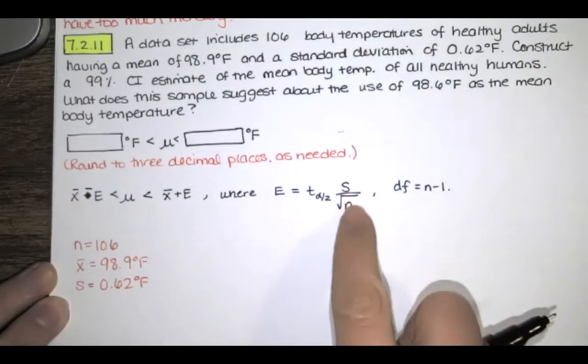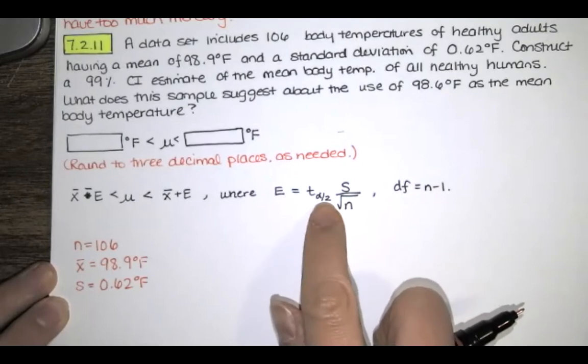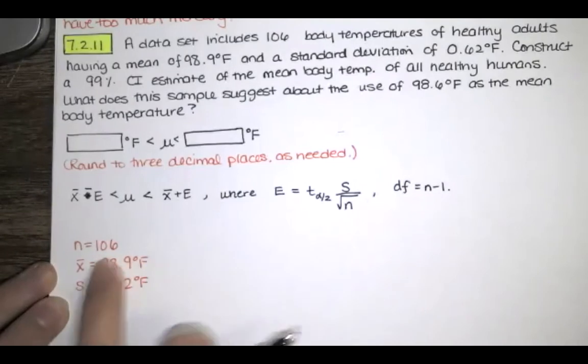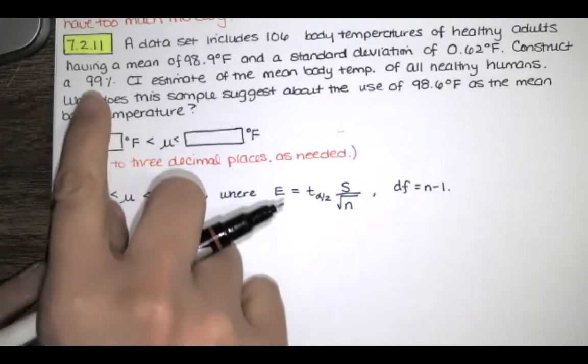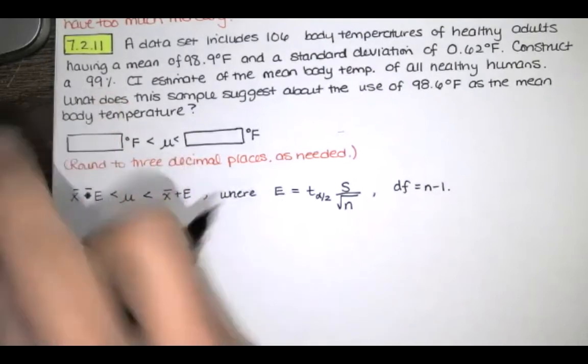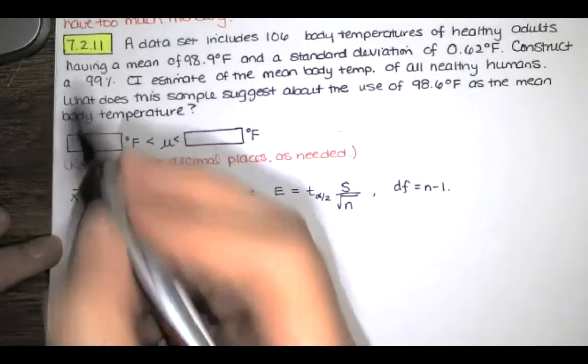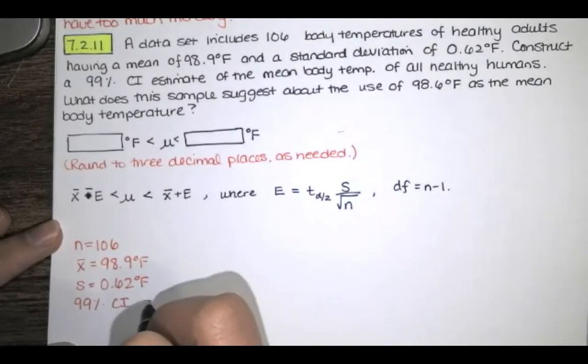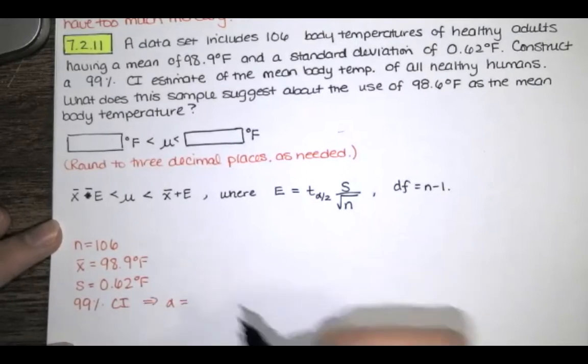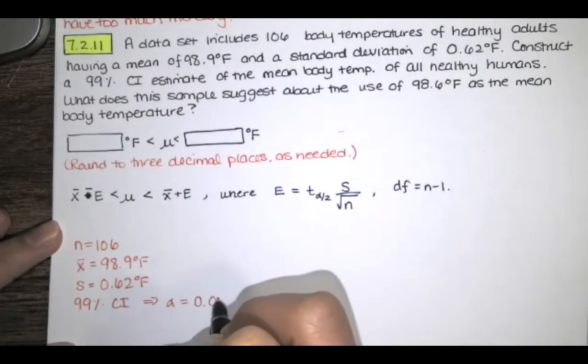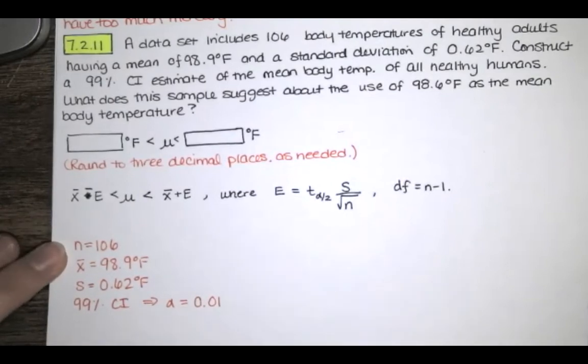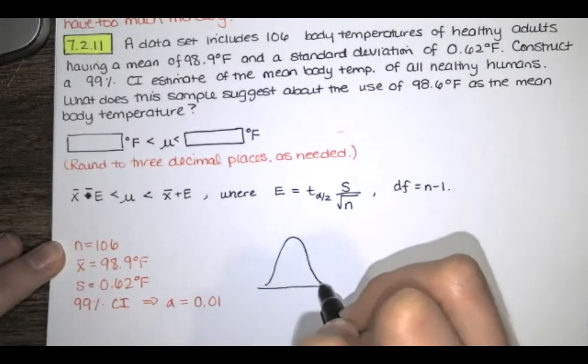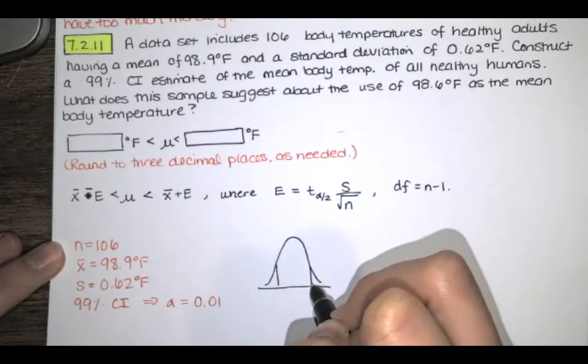The only thing that I don't have is my t sub α/2. Of course, degrees of freedom we can find because we have n. Now, we're asked for a 99% confidence interval estimate. So that means that α is 1%, or in decimal form, 0.01.